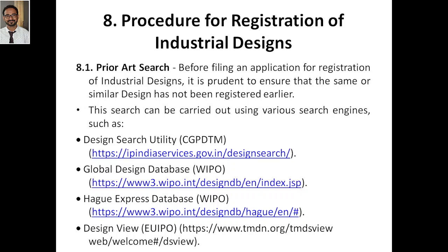If it is already available in the public domain and you still register it, someone can later file a lawsuit. The original creator can make you pay a large damage amount, and there may also be imprisonment. We discussed direct and indirect infringement in the second or third module. So prior art search is essential before filing an application for industrial design registration — you must ensure no similar design has been registered earlier.